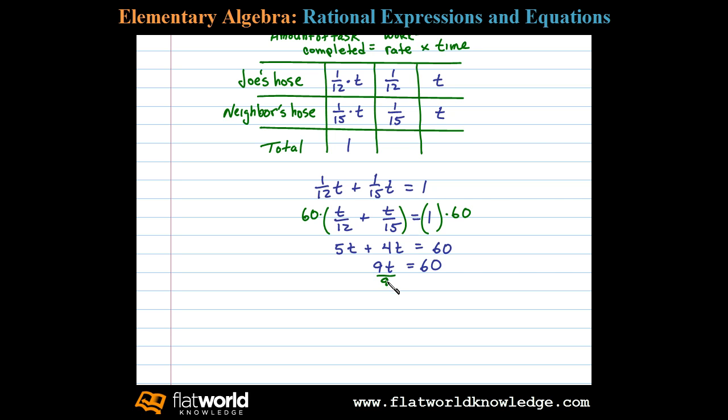To solve for T we can then divide both sides by 9. That'll leave us with T equals 6 and 6 ninths. Well we can reduce that a little bit and write T equals 6 and 2 thirds.